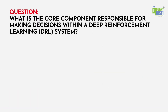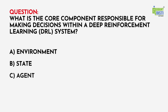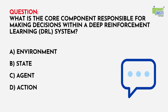Before we begin, can you answer this question? What is the core component responsible for making decisions within a deep reinforcement learning system? A. Environment. B. State. C. Agent. D. Action. Let us know your answers in the comments section below. The answer will be announced at the end of this video.